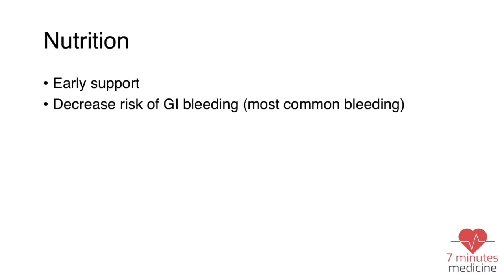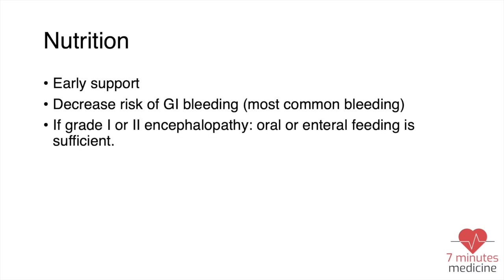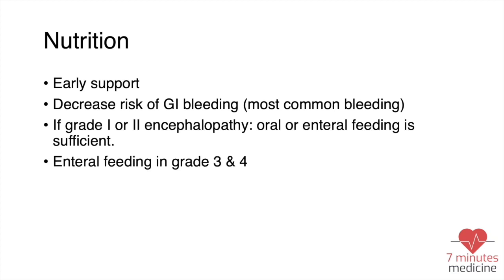For nutritional support, early nutritional support is highly recommended because it decreases the risk of GI bleeding. If you have encephalopathy grade one or grade two, oral feeding can happen with no problem. If you have encephalopathy grade three or four, then enteral feeding is a better option. Check our lecture on hepatic encephalopathy for more details.